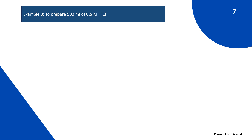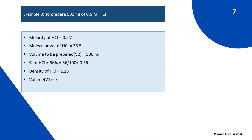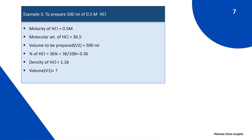Example 3: To prepare 500 ml of 0.5 molar HCl. Data: molarity of HCl is 0.5 molar, molecular weight of HCl is 36.5, volume to be prepared V2 = 500 ml. Percentage of HCl is 36%, which equals 0.36. This can vary from 32 to 37%; check the bottle label. Density of HCl is 1.18, also found on the bottle label.